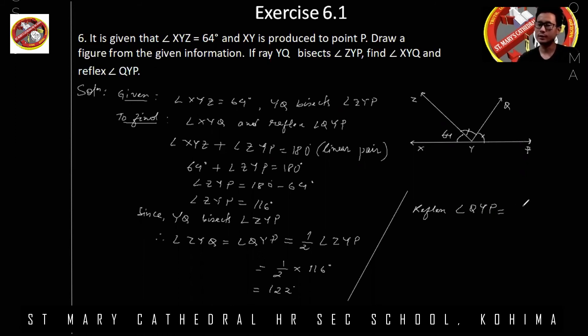So here, 360 minus angle QYP. Okay. So here 360 minus angle QYP is 58. So 360 minus 58, so I'll get 302.